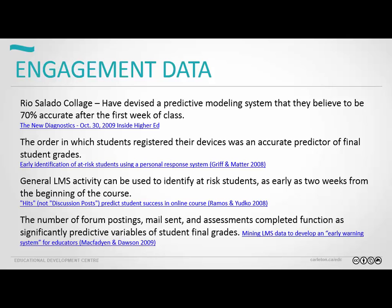Some other things on engagement data: as I mentioned before, there are a bunch of institutions doing this — looking at engagement data — and a lot of them can predict within the first couple weeks how a student's final grade is going to pan out. A couple of these studies are a few years old because they're better cited and peer-reviewed, but there's a lot more recent work as well. Potentially up to 70% accuracy after the first week of class.